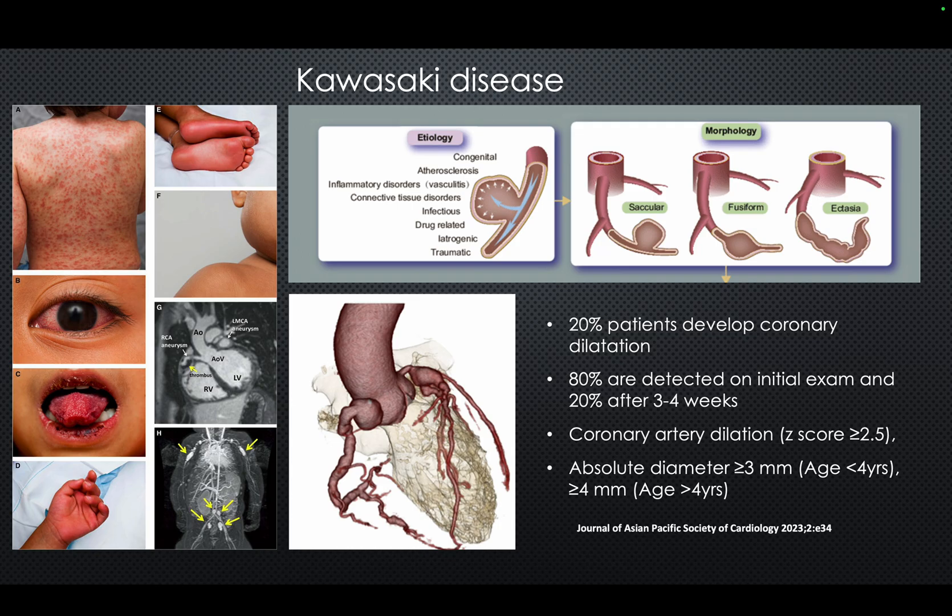It is a good idea to look at the coronaries within the first one to two weeks of disease onset, and only 80 percent of cases are picked up at this time. Twenty percent would be picked up later, because aneurysms many times take a longer time to form.